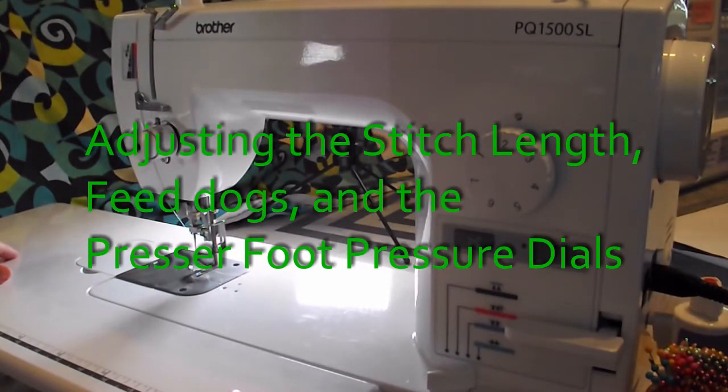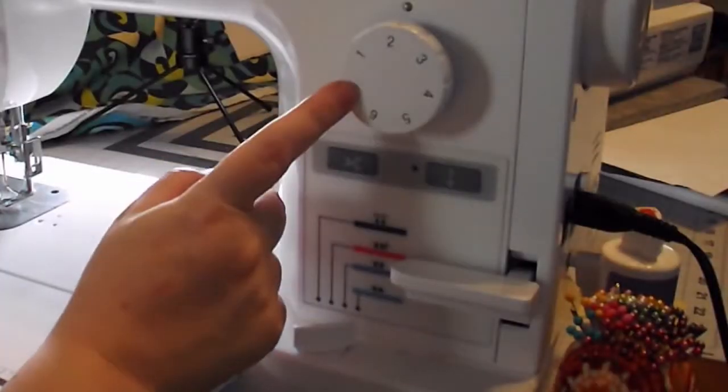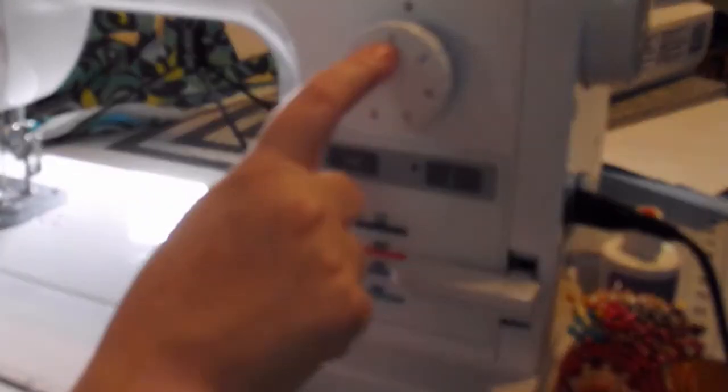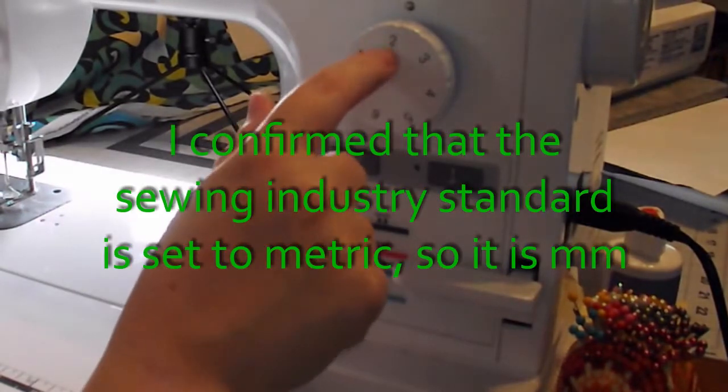I'm going to show how to adjust some of the things on this machine. This dial right here is the stitch length. Right now it's set to a 2. I believe these are by the millimeter, so this is probably 2 millimeters.